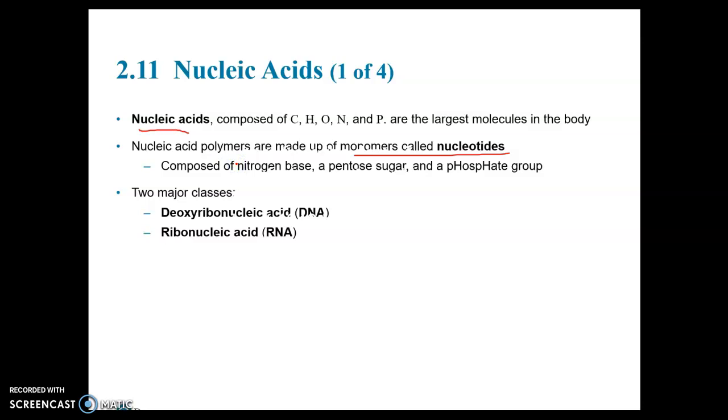Each nucleotide is composed of three parts: the nitrogenous base, the pentose sugar (can be either ribose or deoxyribose), and a phosphate group. So a sugar, a phosphate group, and a base. The base can be one of four different bases.